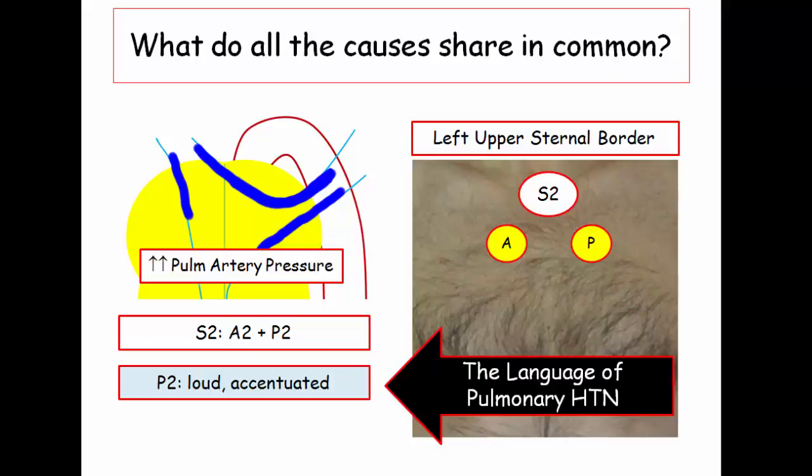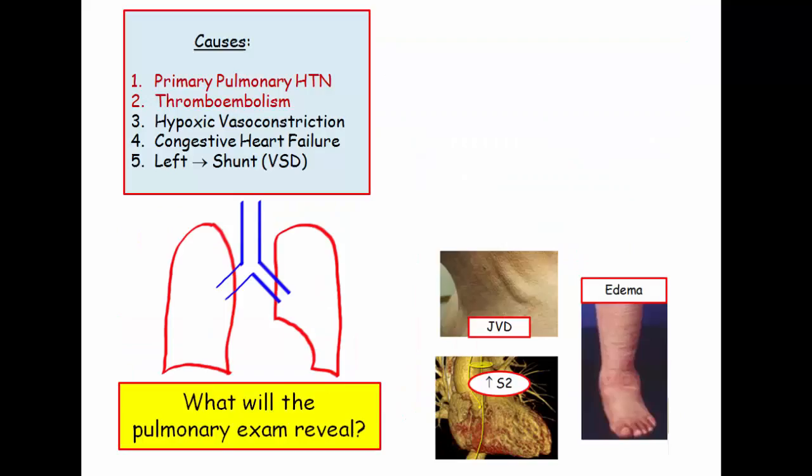Let me be perfectly clear: if they describe a loud or accentuated P2 at the upper left sternal border, they are explicitly telling you the patient has pulmonary hypertension. We've mentioned JVD, edema, and the loud S2—but what will the lung sounds reveal in pulmonary hypertension?